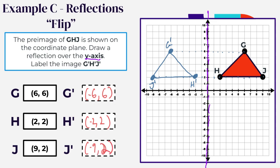Notice that when reflecting over the Y axis, the Y coordinate stayed the same every time, while the X coordinate changed to its opposite. If it was positive 6, it became negative 6; positive 2 became negative 2; positive 9 became negative 9. So the coordinate that changes depends on which axis you flip over — flipping over the Y axis changes the X coordinate. Let's find out if the opposite holds when flipping over the X axis in example D.